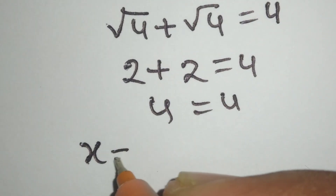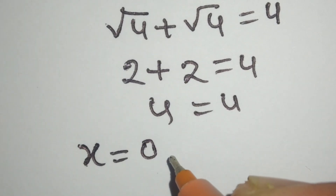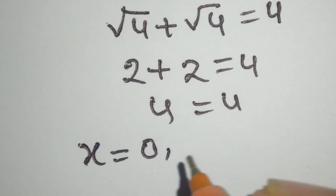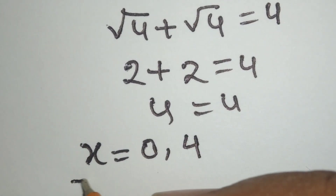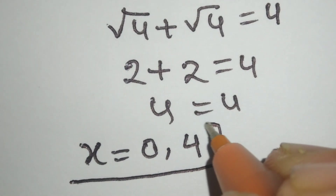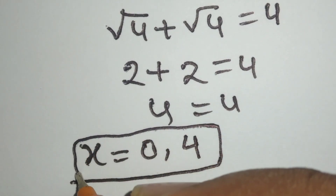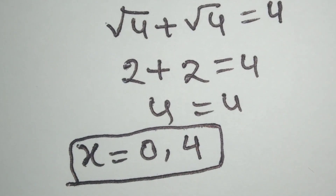Therefore, x equal to 0 and x equal to 4 are the correct values of x. Thanks for watching the video — please like, comment, share, and subscribe.